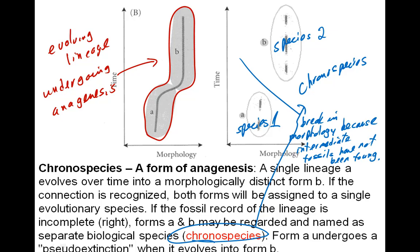If we recognize that there are intermediates in the fossil record, we see it's all one evolving lineage. But if there's a break in morphology because we haven't found intermediate fossils, we would recognize two species and call these chronospecies. These may be false species, because if we had the intermediates, we would say it's an evolving lineage. Chronospecies are an outcome of thinking about evolution in terms of anagenic change — a population evolving and changing its morphology over time.